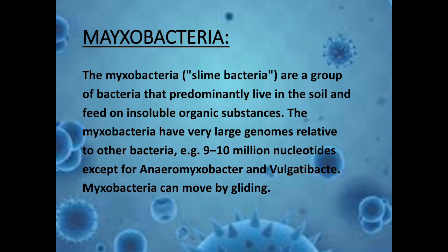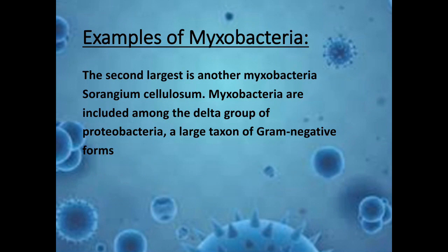Myxobacteria feed on insoluble organic substances and have a very large genome relative to other bacteria — for example, 9 to 10 million nucleotides. Myxobacteria can move by gliding movement. Sorangium cellulosum is the second largest Myxobacterium. Myxobacteria are included among the Delta group of Proteobacteria, a large taxon of gram-negative forms.